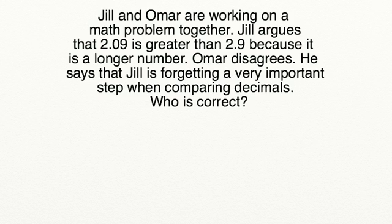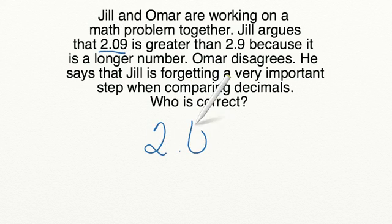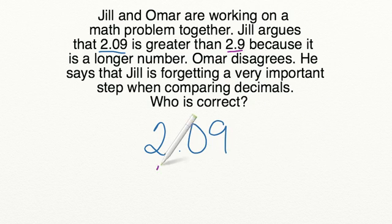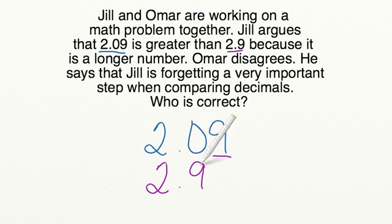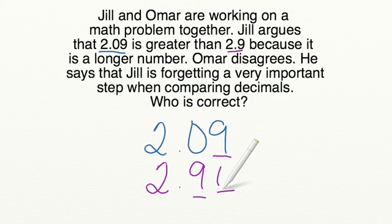Before we can decide who's correct, we need to line up our decimals. So let's go ahead and write out two and nine hundredths, and then directly below it, we're going to write two and nine tenths. Now we need to make sure that our decimals line up, and that's going to line up the rest of our place values. Since two and nine hundredths goes to the hundredths place, and two and nine tenths only goes to the tenths place, we're going to add a zero to the hundredths place as a placeholder.